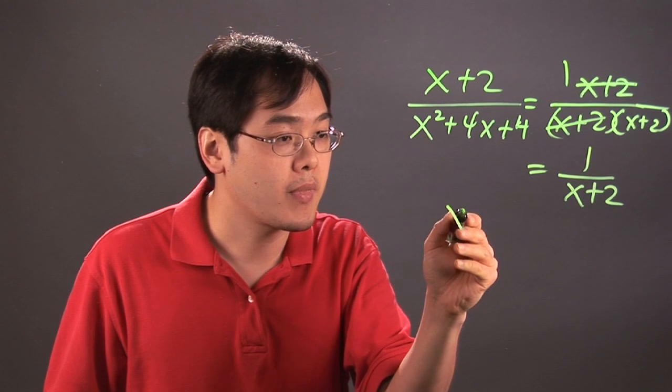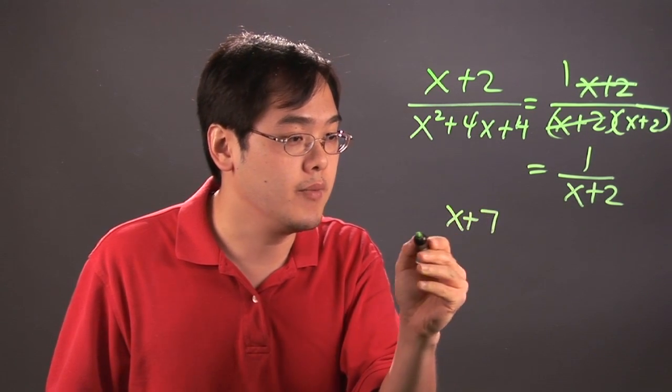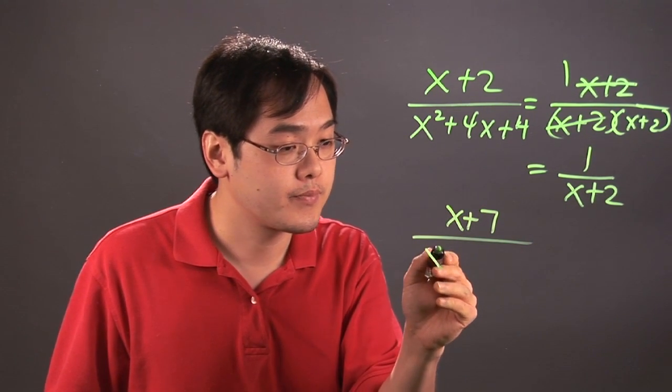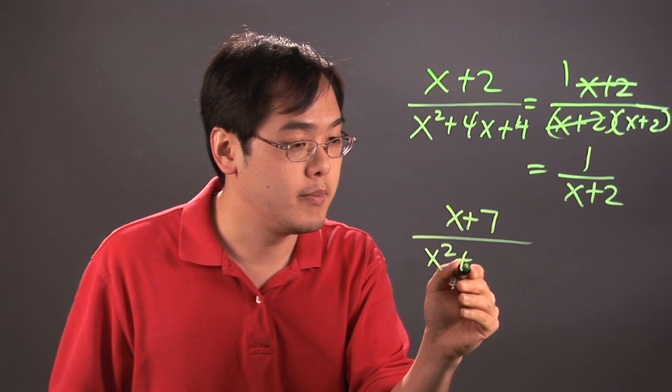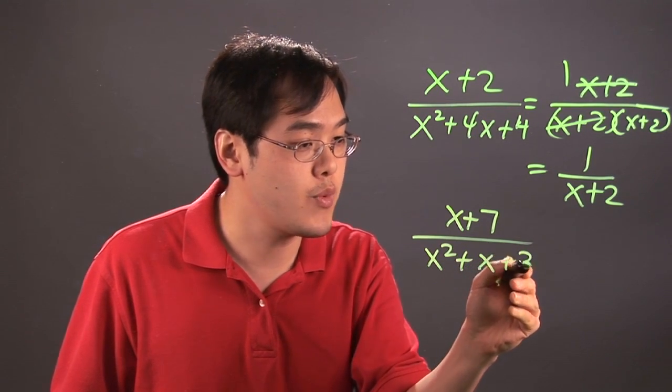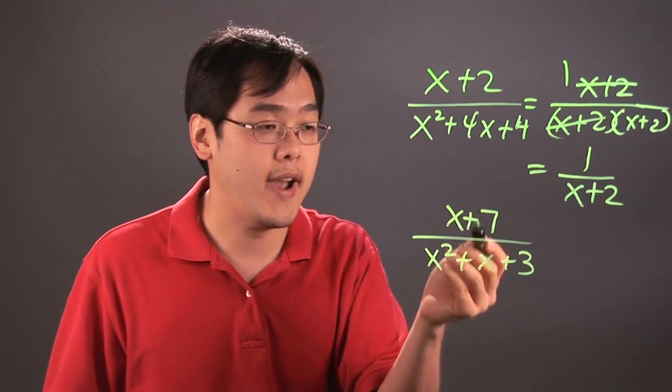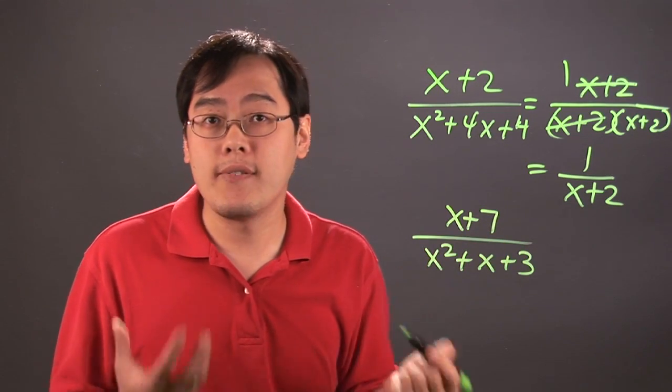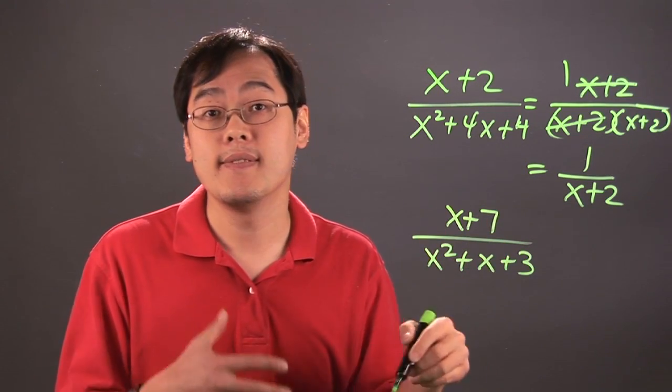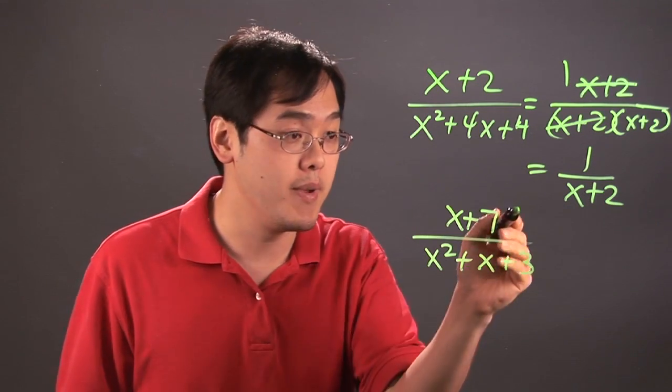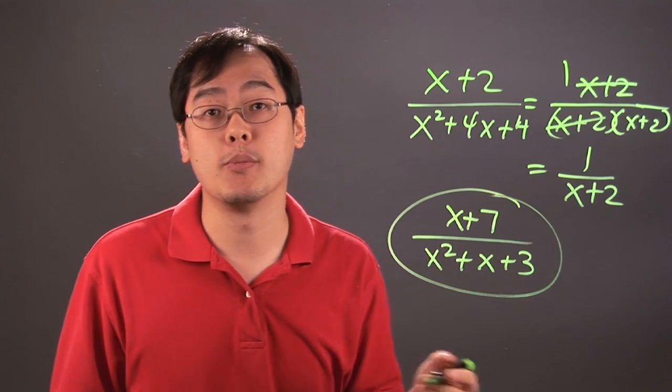But if you have something like this, if you have x plus 7 over x squared plus x plus 3, for example, this is not factorable, and this is about as not factorable either. And so we have a case of a fraction that's kind of already in reduced form. This is not reducible any further.